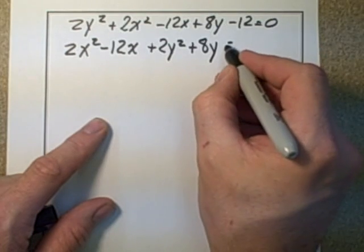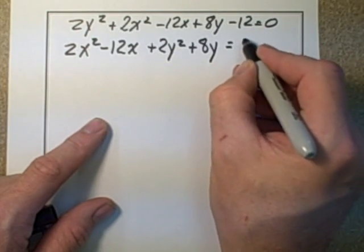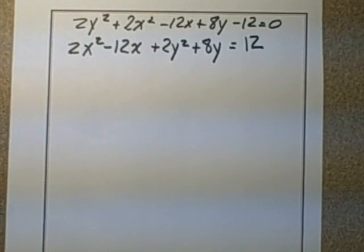And then I'm going to bring the 12 to the other side. So that negative 12 will become positive 12 over here. So we add 12 to both sides.